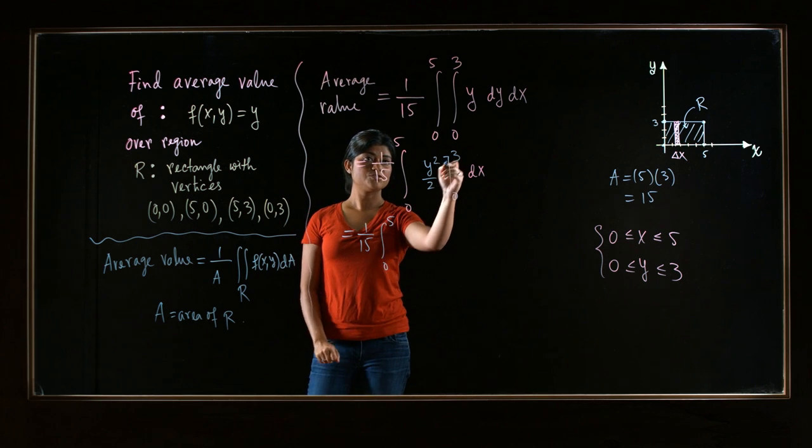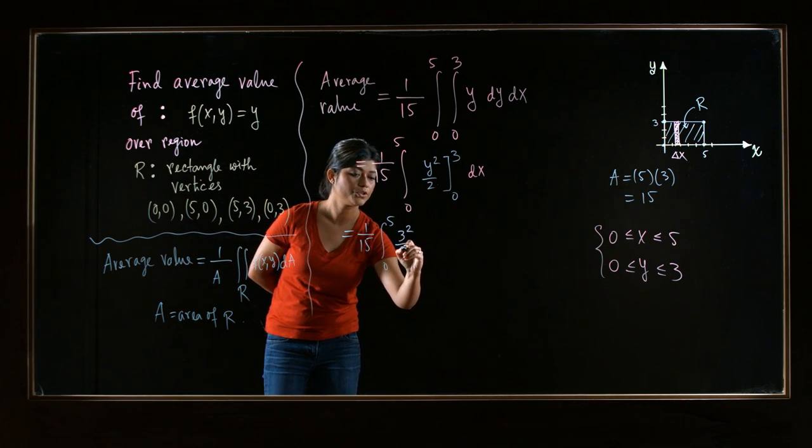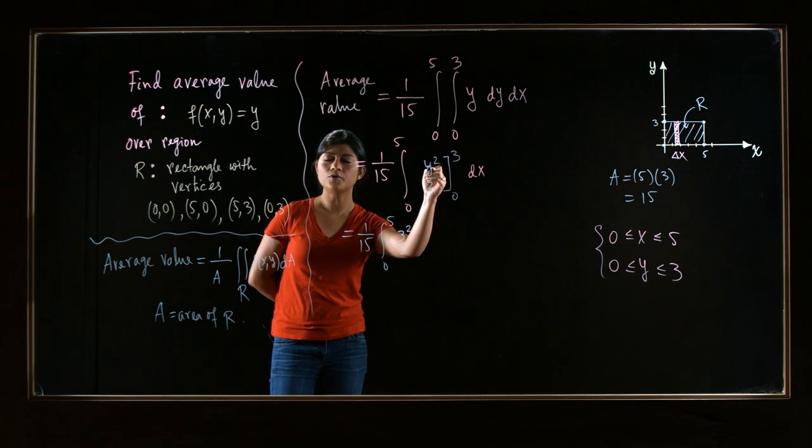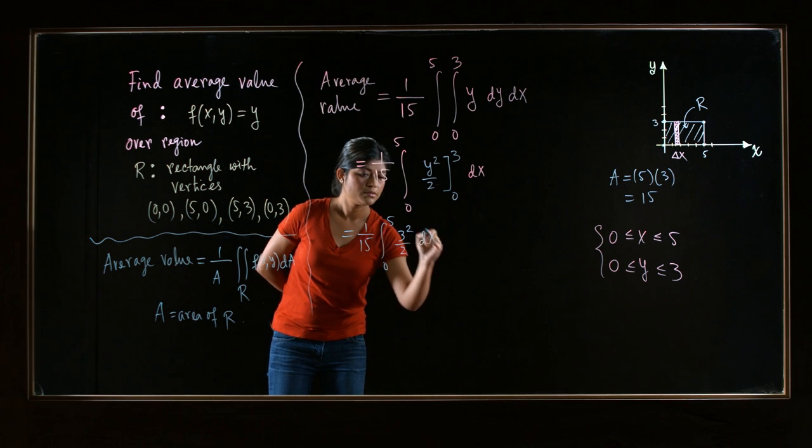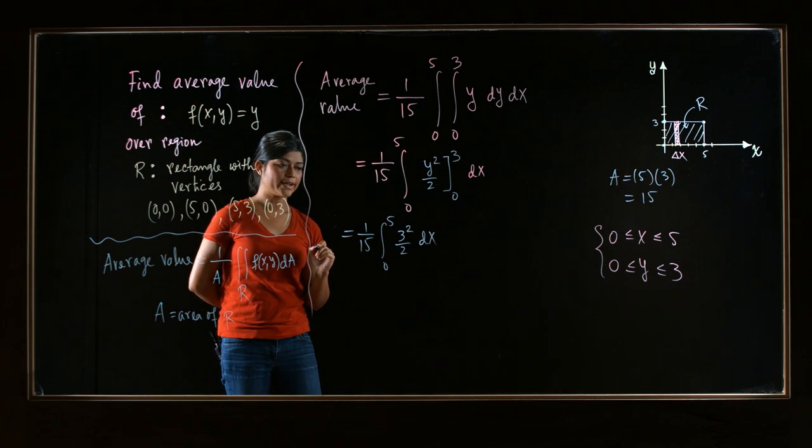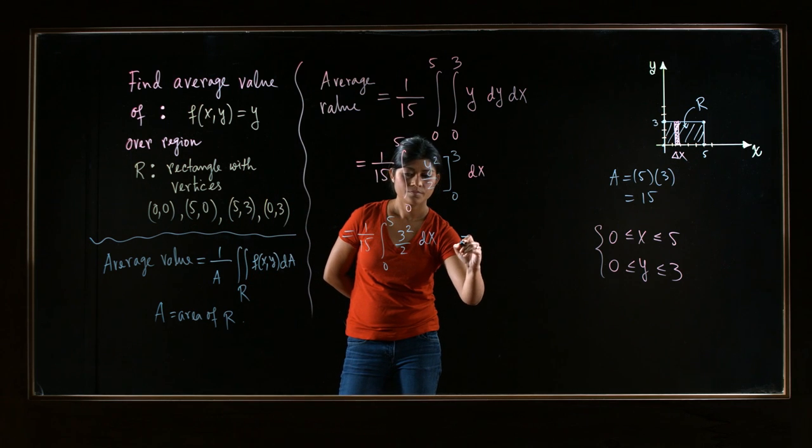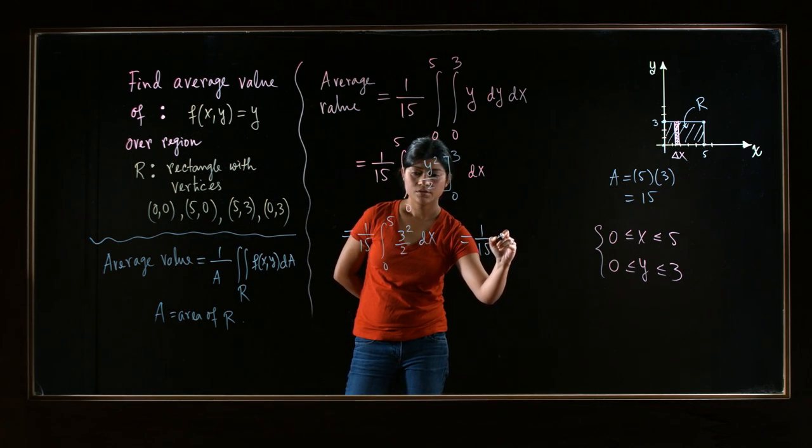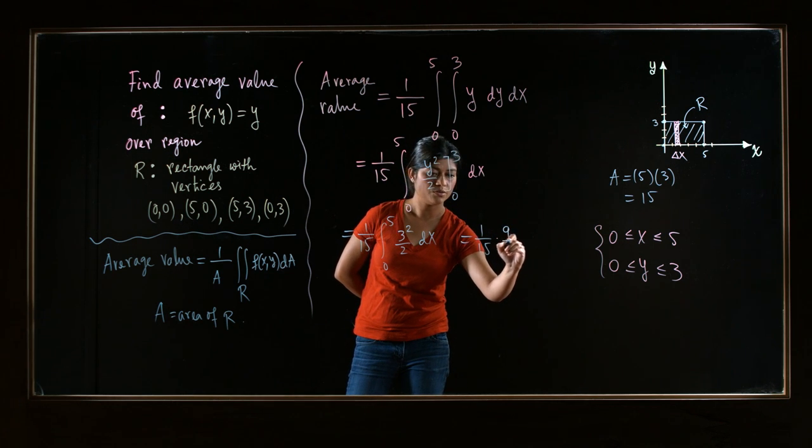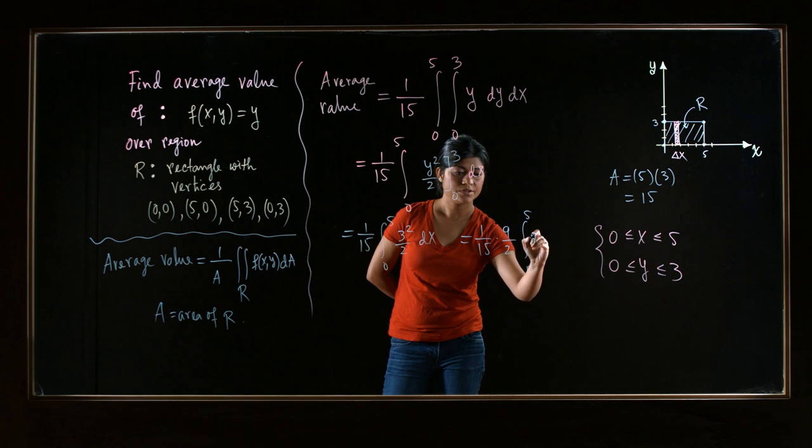So plug in 3 for y, and you get 3 squared over 2. Then when you plug in 0 for y, you just get 0, so you can just ignore that. So just the constant times dx. Now, since it's a constant, pull it outside. So you get 1/15 times 3 squared is 9 over 2, and then integral 0 to 5 dx.